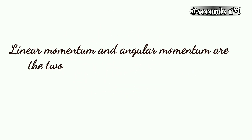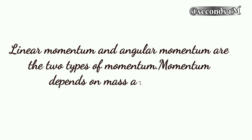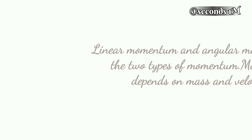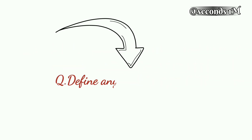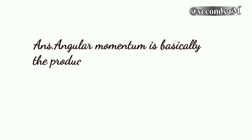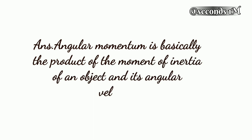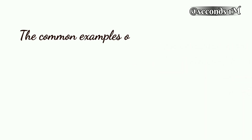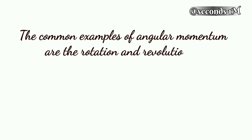Linear momentum and angular momentum are the two types of momentum. Angular momentum is basically the product of the moment of inertia of an object and its angular velocity. Common examples of angular momentum are the rotation and revolution of Earth.